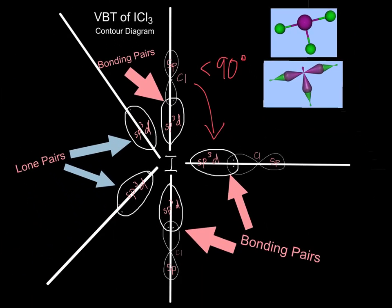From this, you were able to determine the Lewis diagram, VSEPR diagram, electron box diagram, as well as contour diagram of iodine trichloride.